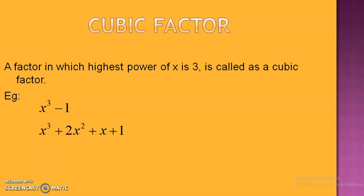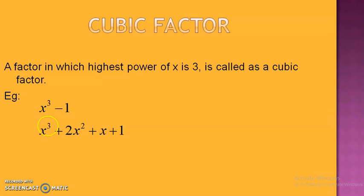Now, what is a cubic factor? A factor in which the highest power of x is 3 is called a cubic factor. The first example, x cubed minus 1, has only one term of x, and the power of x is 3 — so it is a cubic factor. In the second example there are three terms of x: x cubed, x squared, and x. The highest power is 3, so it is also called a cubic factor.